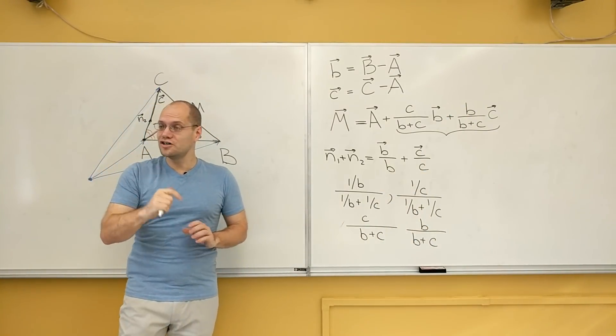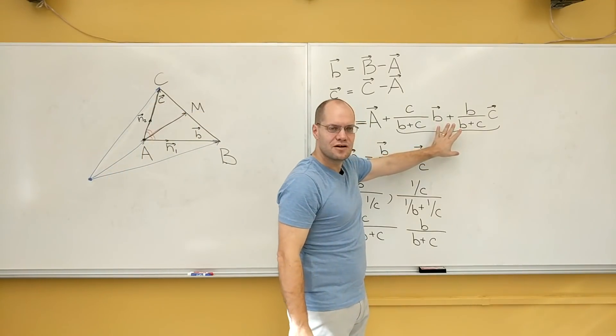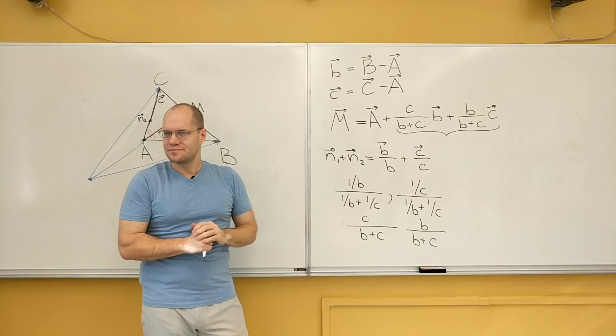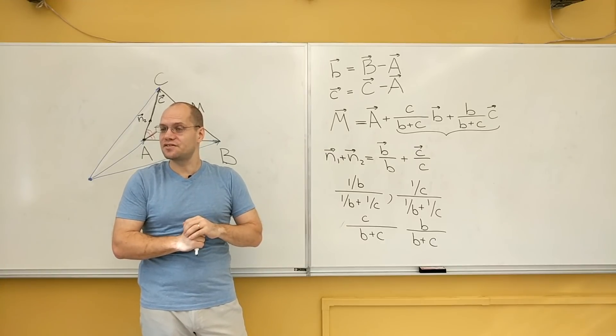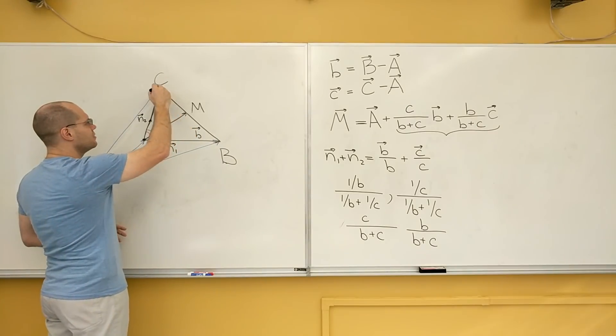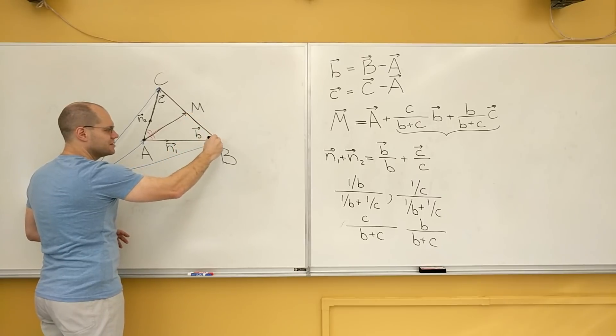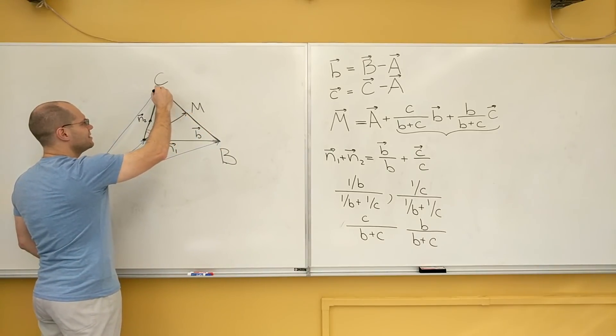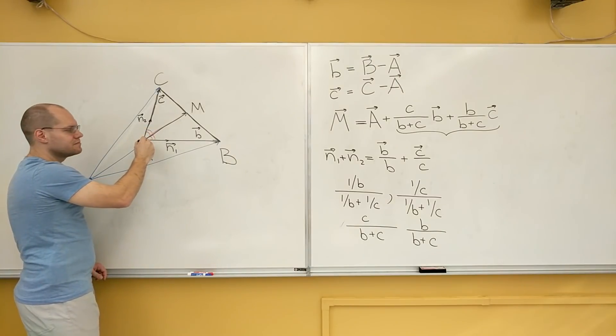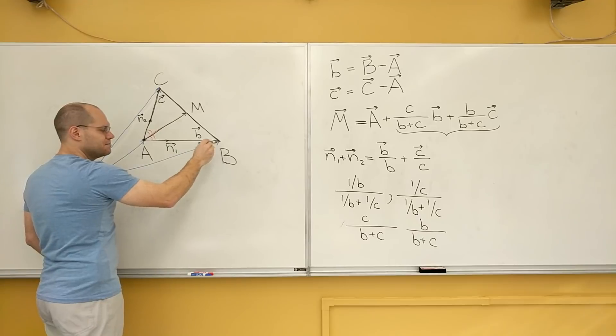What this also is, is the proof, if we focus on this part alone, of I think it's called the triangle bisector theorem. What the triangle bisector theorem states is that when you draw a bisector and you look at the length of this segment compared to the length of this segment, you will find that the length of this segment divided by this side, by the length of this side, equals the length of this segment divided by this side.